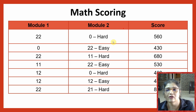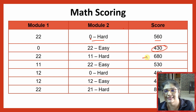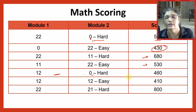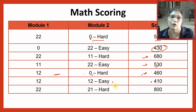Similarly for math: getting all questions right in module one and nothing right in module two is a 560. The vice versa is 430. When you go to half and half, 22 right in module one and 11 right in module two is a 680, and the vice versa is 530. Getting 12 right in module one and nothing right in module two is a 460. Sometimes if those 12 also give you an easy module, you may get as low as 410 instead of 460, just because you got an easy module two.